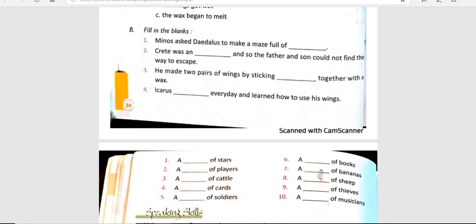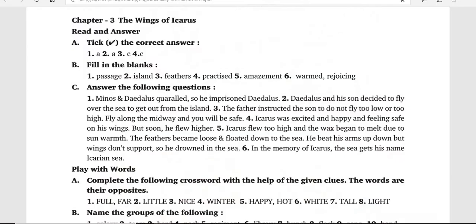Crete was on a dash, and so the father and son could not find the way to escape. जो Crete था, वो क्या था? एक island था — Crete was an island.